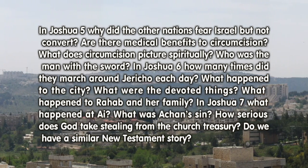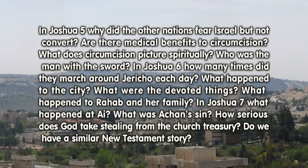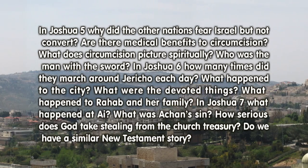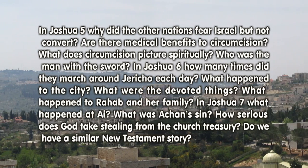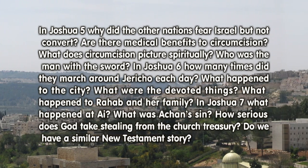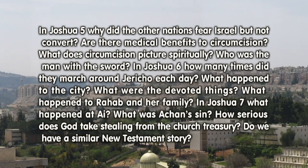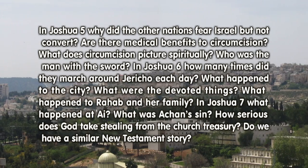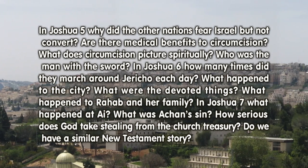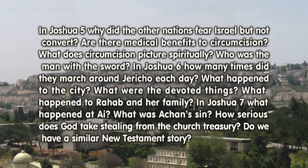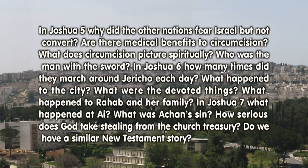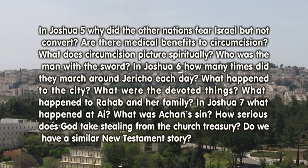In Joshua 6: How many times did they march around Jericho each day? What happened to the city? What were the devoted things? What happened to Rahab and her family?